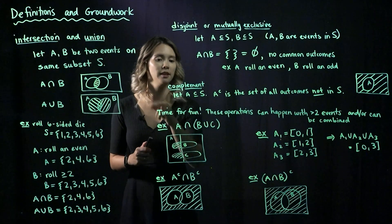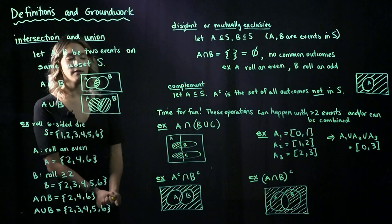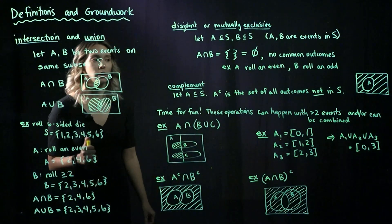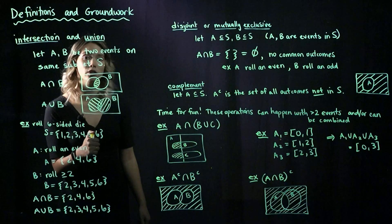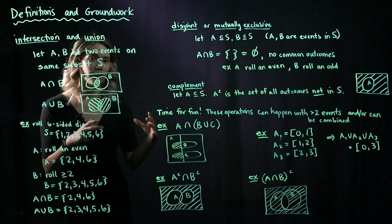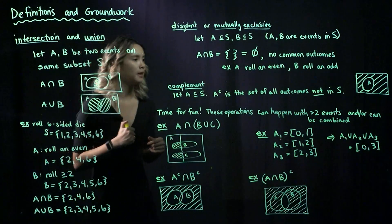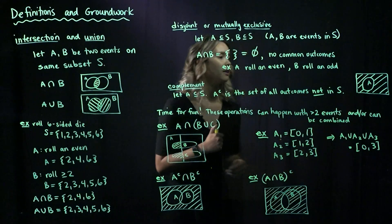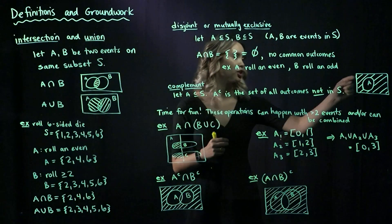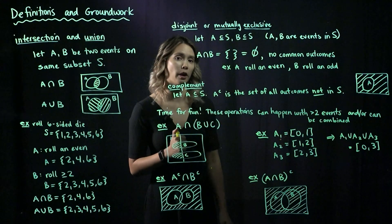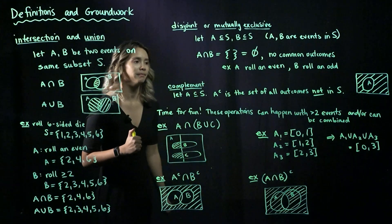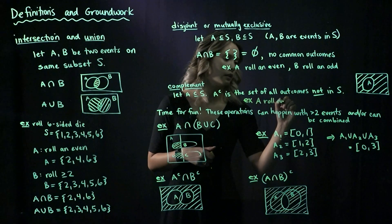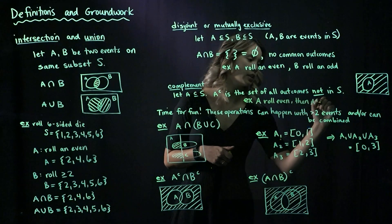Finally, we have the definition of complement. If A is an event in S, then A complement — written as A with a superscript C — is the set of all outcomes in S that are not in A. If the larger rectangle is S and the circle is A, then everything in S but not in A is shaded, representing A complement. For example, if A is rolling even, then A complement is rolling odd.